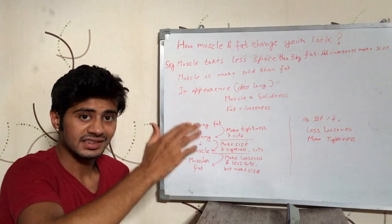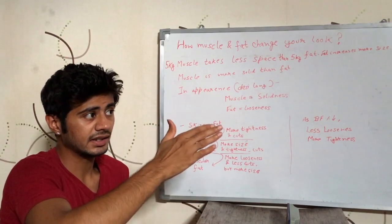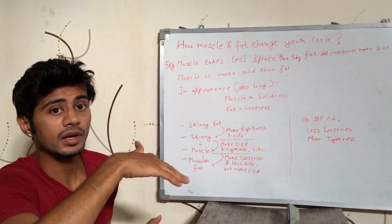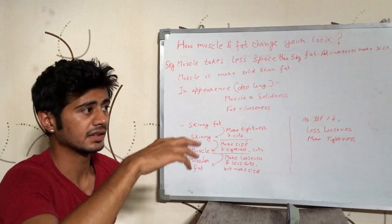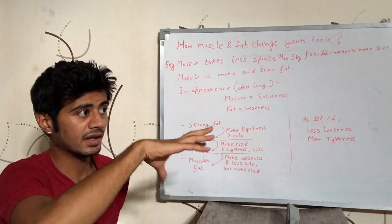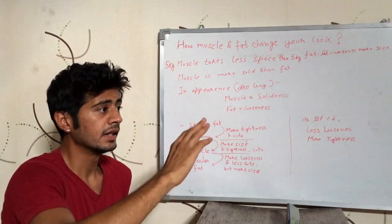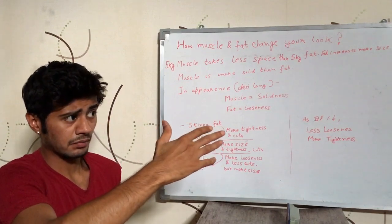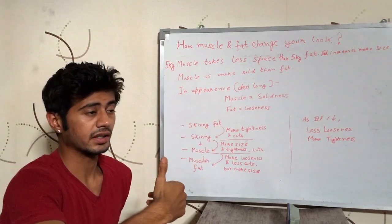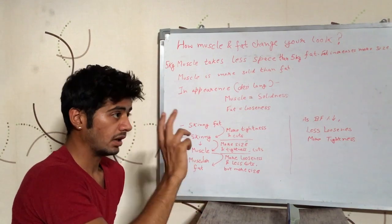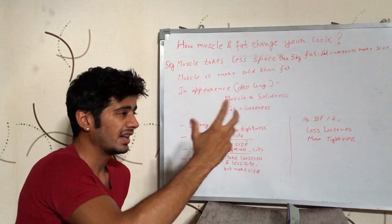Now you will see with the same muscle mass, you will see that the person is looking more tighter in appearance. His appearance is more tight as compared to when he had more fat and he has more cuts in his body, more cuts in his muscles in appearance and more tightness in the body.